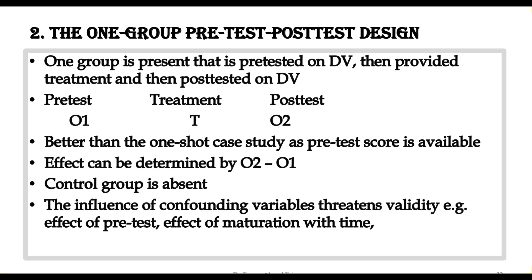Note that the control group is not present here. The weakness of this experimental design is that the influence of confounding variables threatens the validity of this design, meaning that we cannot fully confirm our experimental results. For example, the effect of the pre-test and the effect of maturation with time are confounding factors, which we will discuss in the later slides.